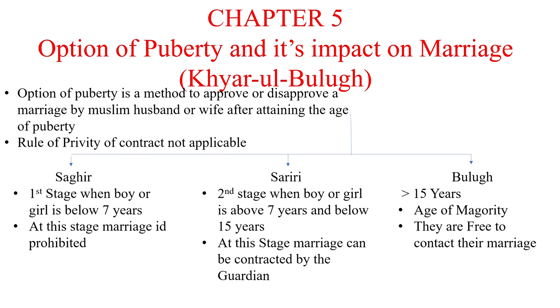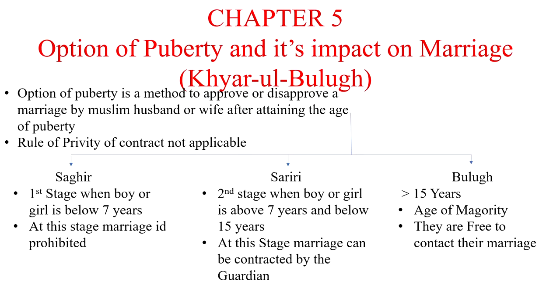First of all, I would like to discuss Option of Puberty — in Arabic, this is known as Khiaar ul Bulog. There are three stages of age under Muslim law. The first is Saghir, which is the stage when a boy or girl is below seven years. In Islam, at this stage, marriage is absolutely prohibited. That age is known as Saghir.